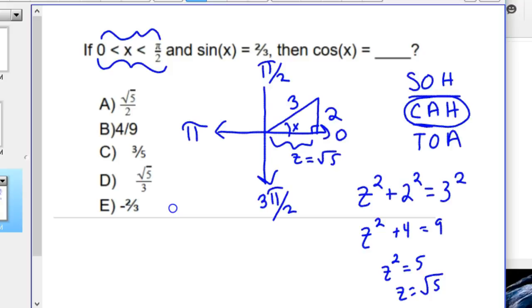And, so, cosine theta is adjacent over hypotenuse. And, so, in our case, our adjacent is the square root of 5. Our hypotenuse is 3. And, so, we know the answer is D.